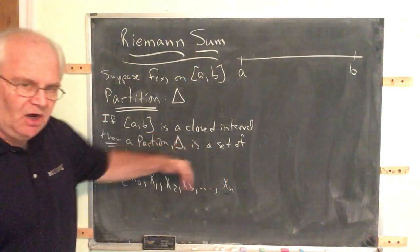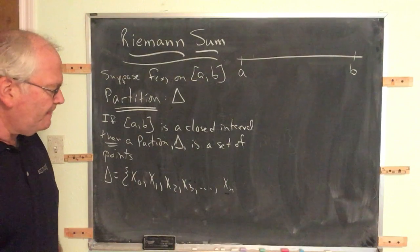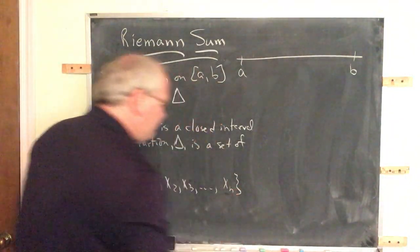So if I have x sub n, there actually are n plus one points. So that's my set of points.